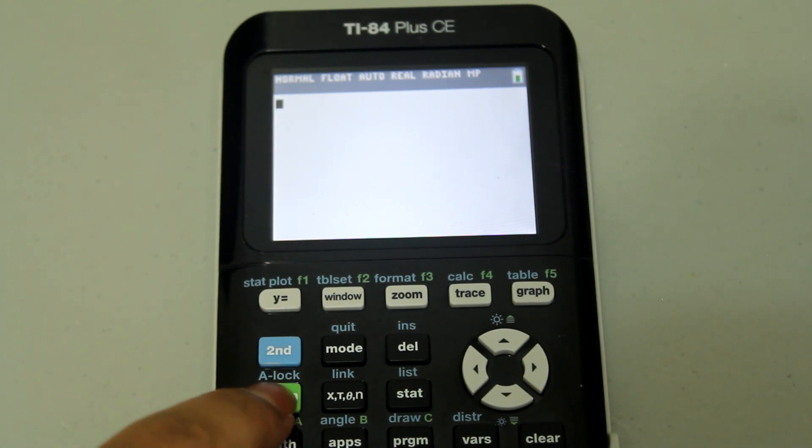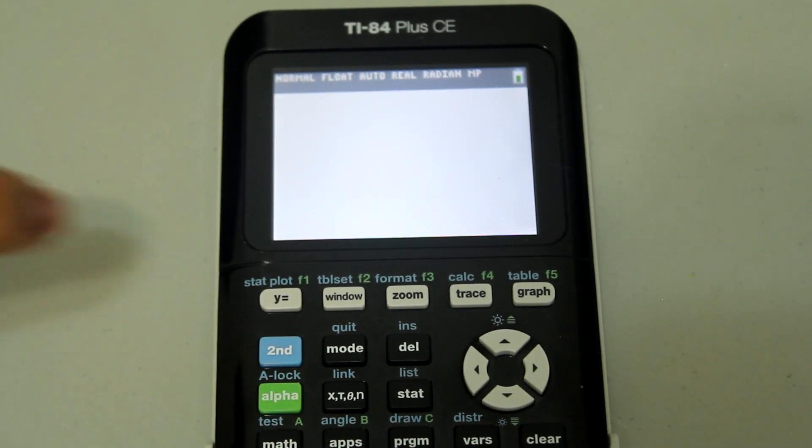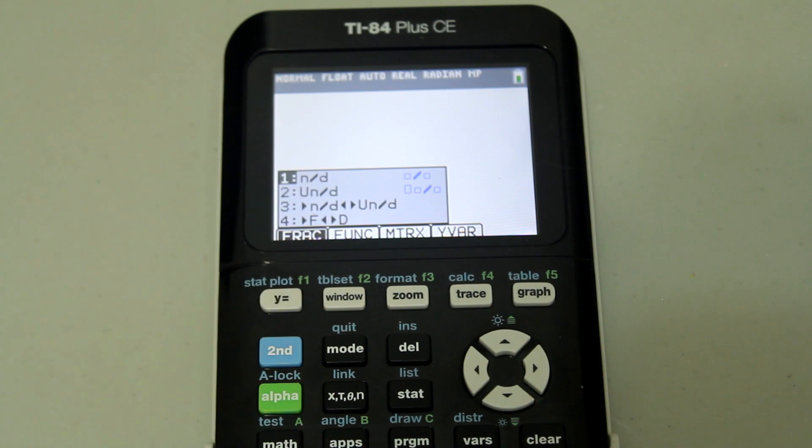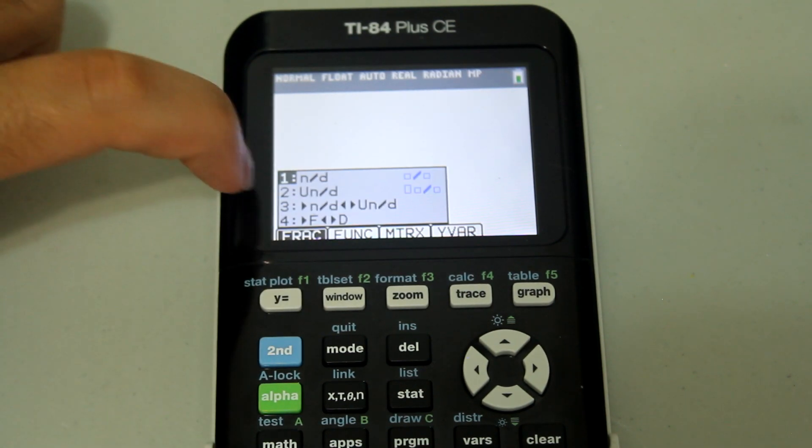First press the alpha button and then press the y equals button. And that brings up a menu that looks like this.